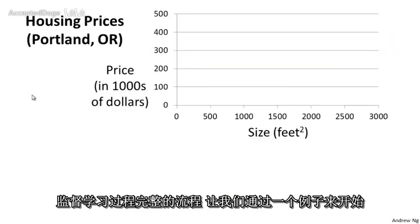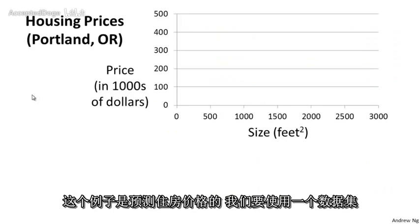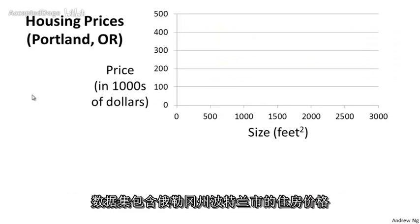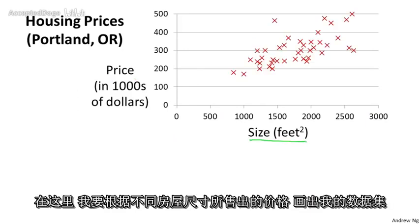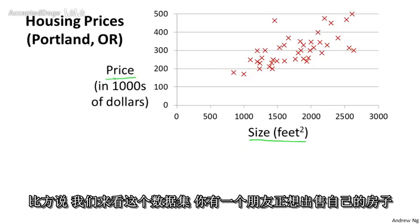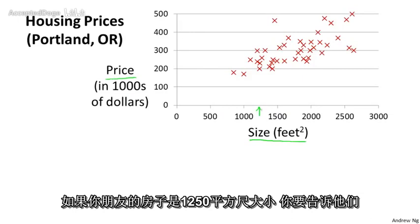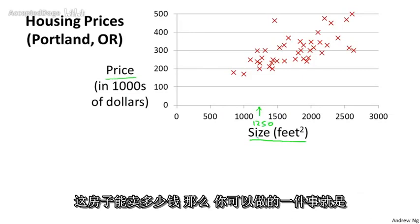Let's use our motivating example of predicting housing prices. We're going to use a data set of housing prices from the city of Portland, Oregon. Here I'm going to plot my data set of a number of houses that were of different sizes that were sold for a range of different prices. Let's say that given this data set, you have a friend that's trying to sell a house, and your friend's house is of size 1250 square feet, and you want to tell them how much they might be able to sell the house for.